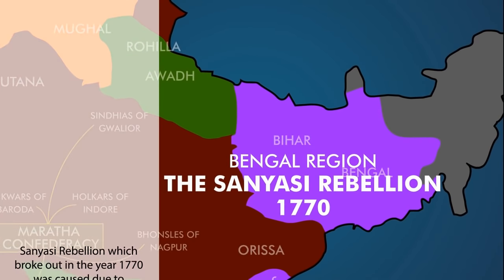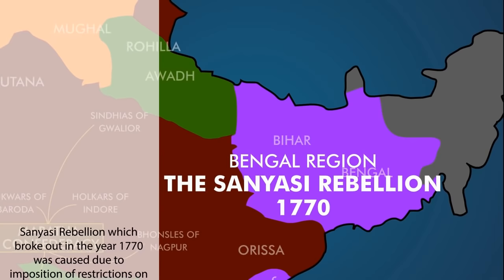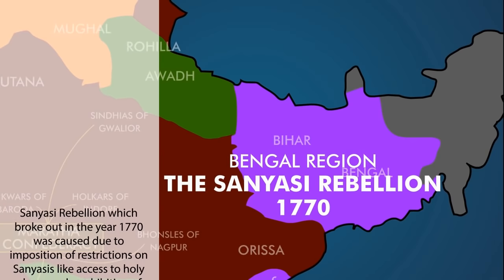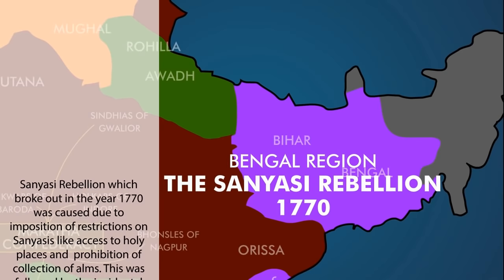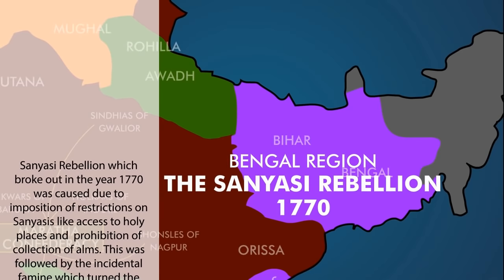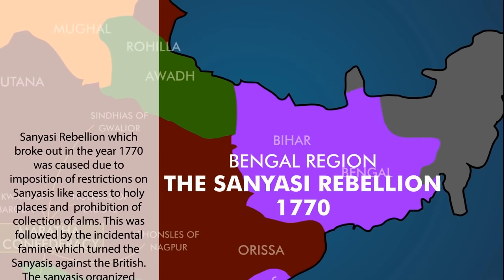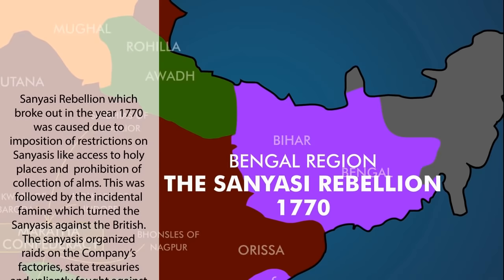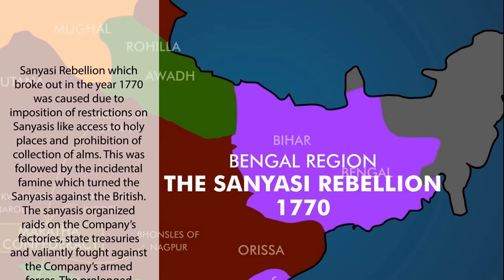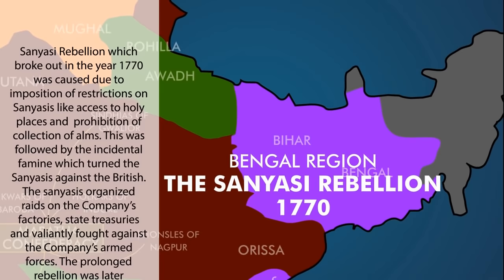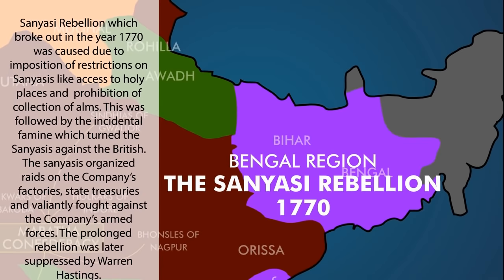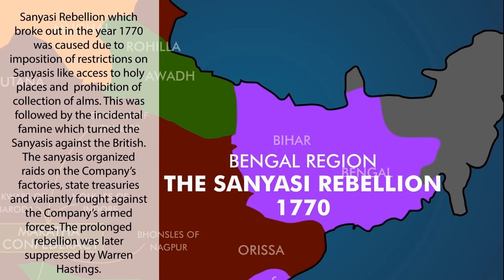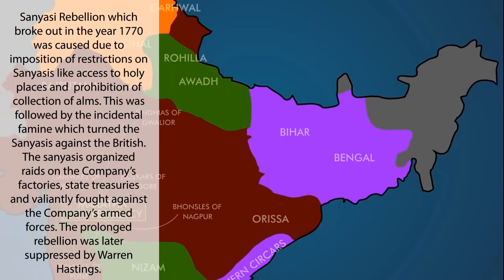The Sanyasi rebellion, which broke out in the year 1770, was caused due to imposition of restrictions on Sanyasis like access to holy places and prohibition of collection of arms. This was followed by the incidental famine which turned the Sanyasis against the British. The Sanyasis organized raids on the company's factories, state treasuries and valiantly fought against the company's armed forces. The prolonged rebellion was later suppressed by Warren Hastings.